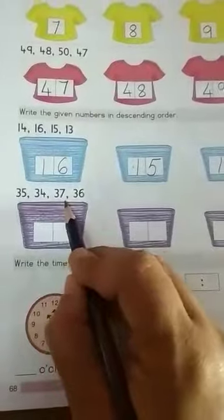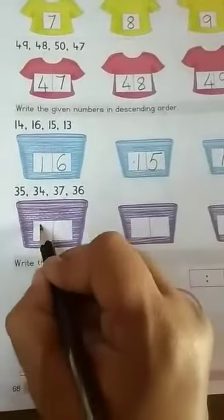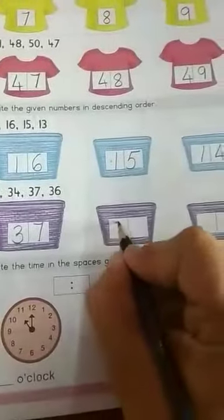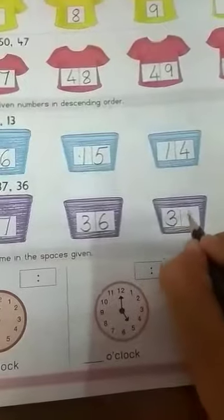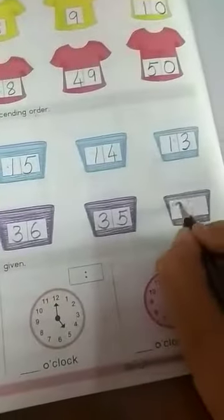Now, 35, 34, 37, 36. 37 is the biggest one. Then comes 36, then 35 and at last 34, 34.